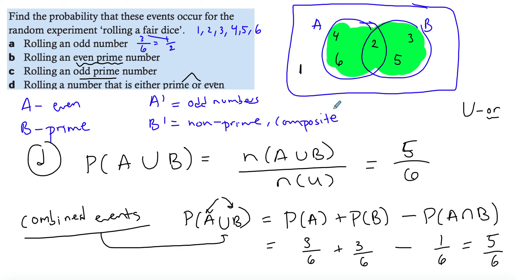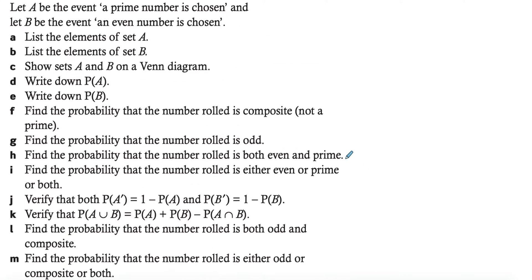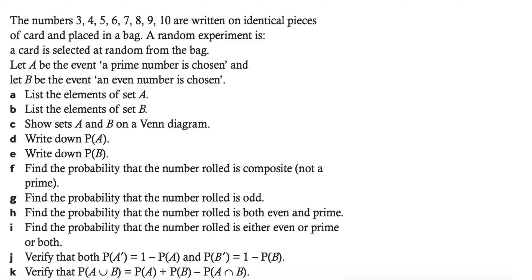This still gives you five over six. So you can solve combined events either by using the Venn diagram directly — highlighting A union B — or by using the rule: P(A) + P(B) − P(A intersect B). Either memorize the rule or understand why it works — you subtract the intersection because you've counted it twice. Now we'll build on this with a longer example. We're picking a random number out of a bag where A is the event of a prime number and B is the event of an even number — the opposite of what we just did. I'd encourage you to pause and try the Venn diagram on your own.